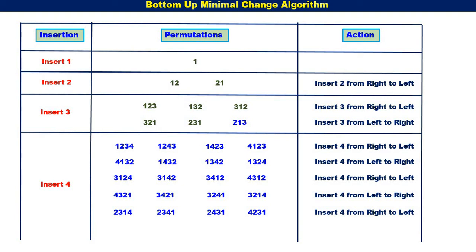Next, the last permutation {2, 1, 3}. For {2, 1, 3}, we move from left to right. First we insert 4 to the left of {2, 1, 3}, we get {4, 2, 1, 3}. Then {2, 4, 1, 3}. Then {2, 1, 4, 3}. Then {2, 1, 3, 4}. You can observe 4 is moving from left to right.